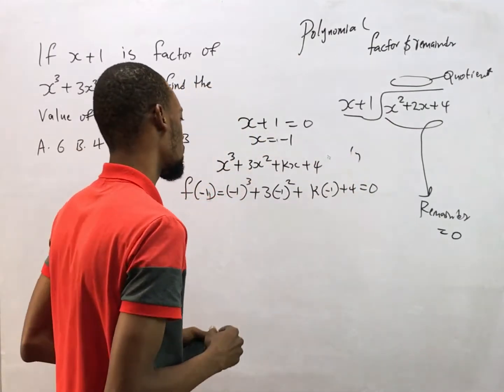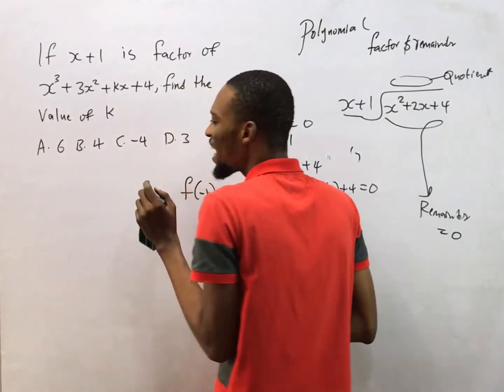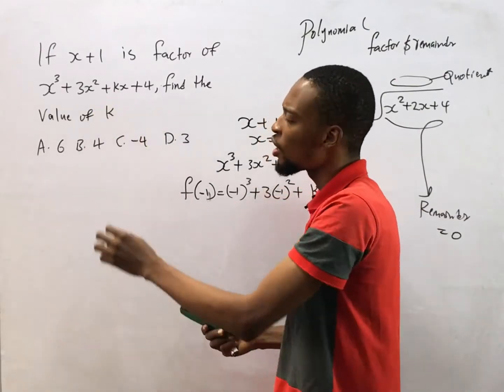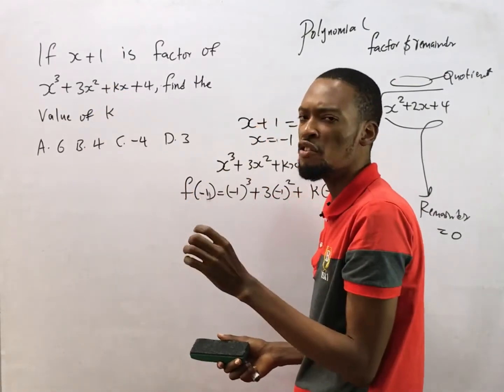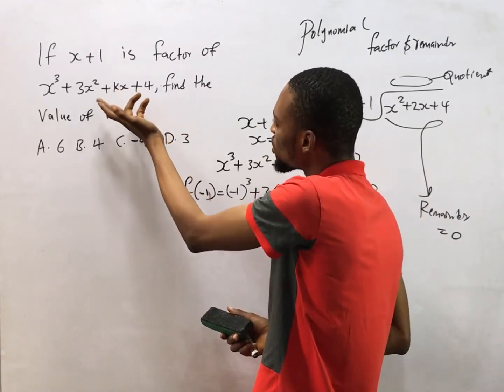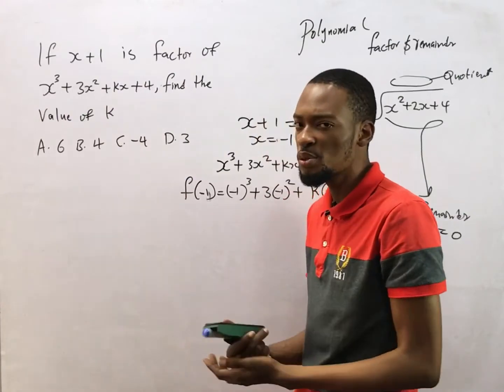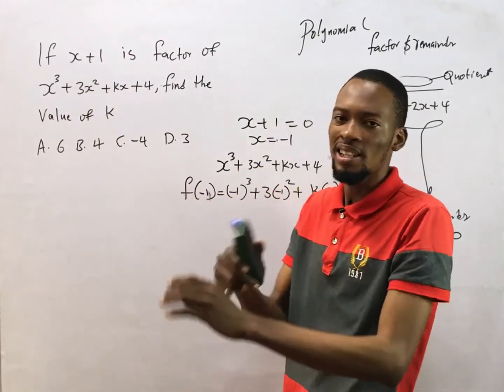So that is that. Anytime you are given this type of question you are usually asked for two things: either you are asked to find the remainder, or one of the values will be given and you are asked to look for it. If you are asked to look for the remainder in this polynomial and here is not k, here is just x, all you just need to do is substitute x equals minus one in the polynomial. That is how you find the remainder.